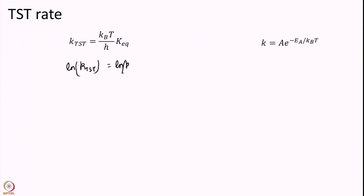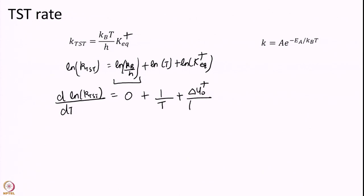This will be ln of this constant plus ln of T plus ln of K equilibrium. If I take a derivative of this with temperature, well this is a constant, so I do have 0 here. ln of T, the derivative of that is 1 over temperature, and the derivative of K equilibrium is delta U naught dagger over KT square.